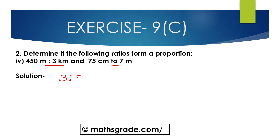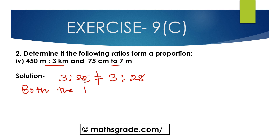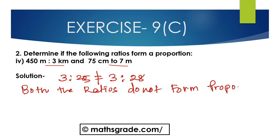3 is to 20 is not equal to 3 is to 28, so the ratios don't form a proportion. These two ratios — 450 meters to 3 kilometers and 75 centimeters to 7 meters — do not form a proportion.